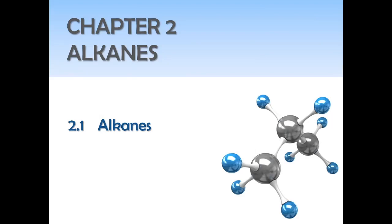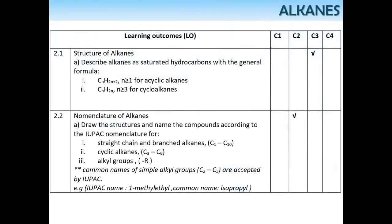Assalamualaikum and hello to all. Today we are going to proceed to Chapter 2, alkanes. So 2.1, structure of alkanes. At the end of the lesson, you should be able to describe alkane as a saturated hydrocarbon with general formula CnH2n+2 for aliphatic alkane, and CnH2n for cycloalkane — alkane with cyclic structure.